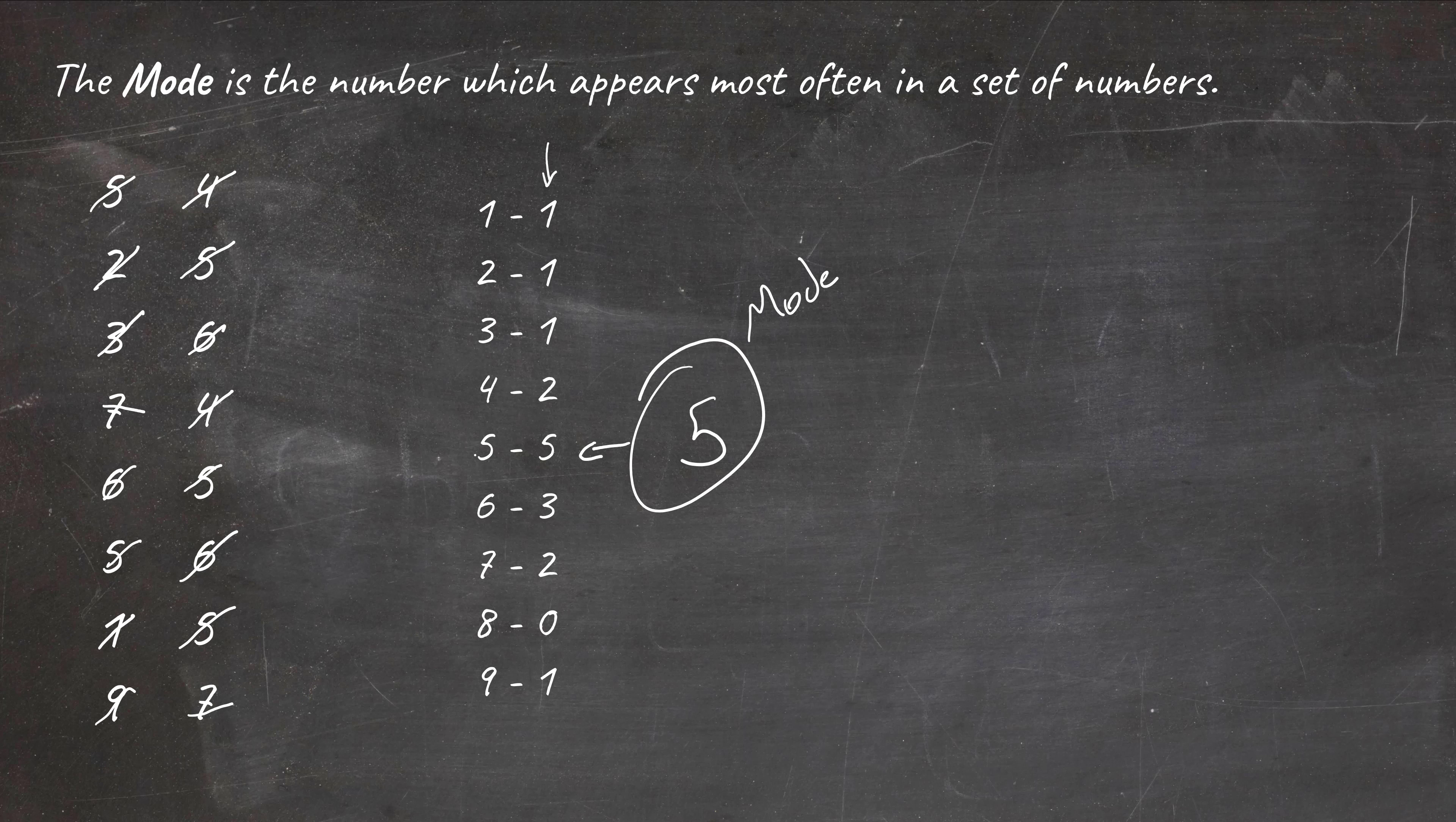The trouble with the mode is that it doesn't always exist. You might have a data set that consists of entirely unique values with no duplicates, and that would mean there is no mode. Or there might be a tie between several different values.